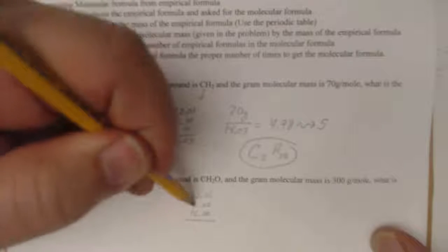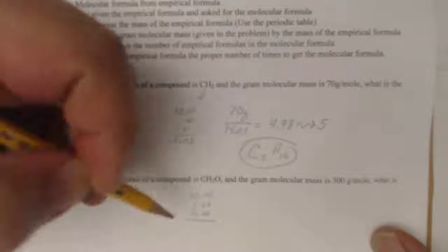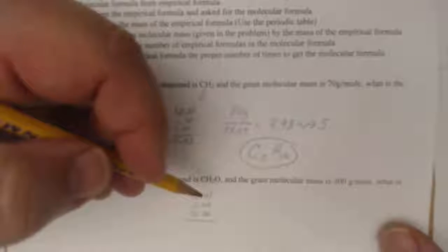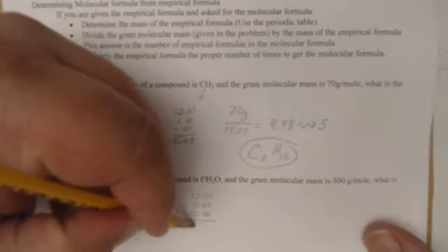And the one oxygen, of course, is 16. So, we've got 12 plus 2 plus 16, and that's going to give me a grand total of 30.03 grams for every mole.